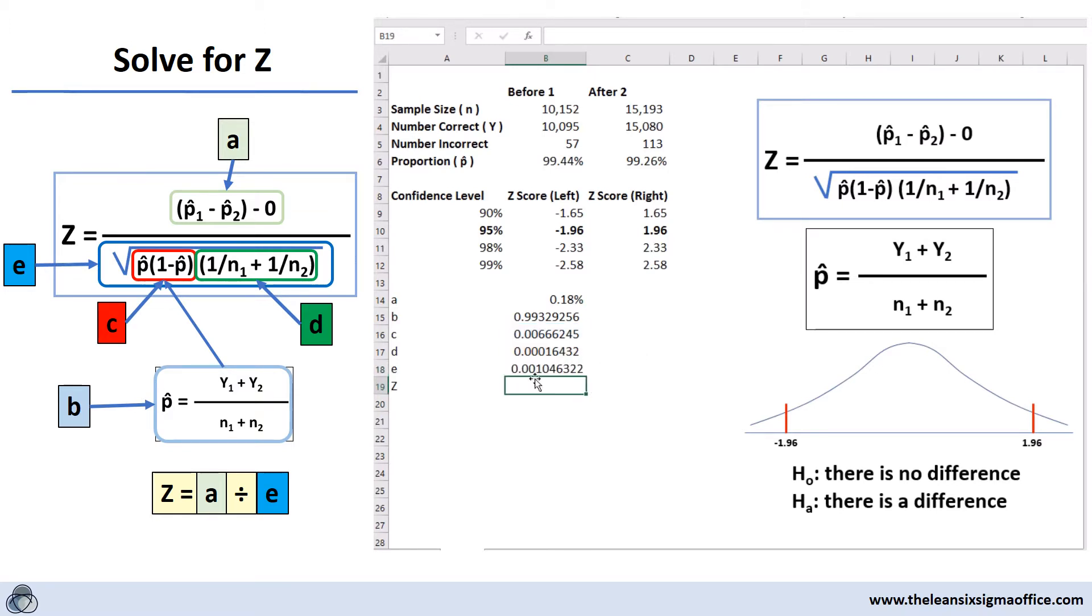Now that we have the numerator and we have the denominator, so that's a and e, what we're going to do is calculate the z value. And we get a z value of 1.74.